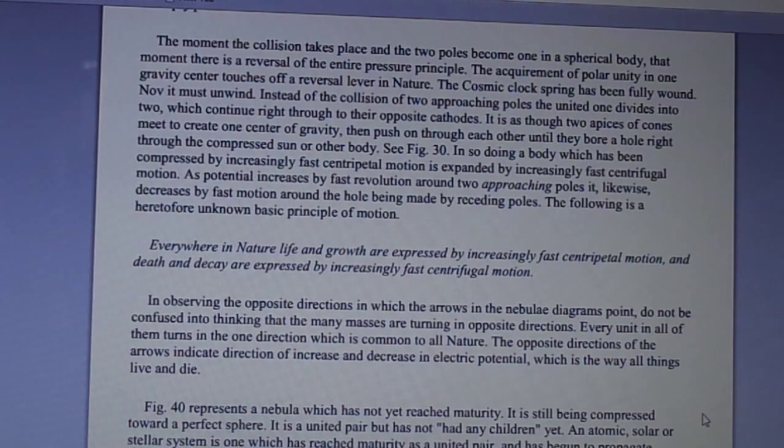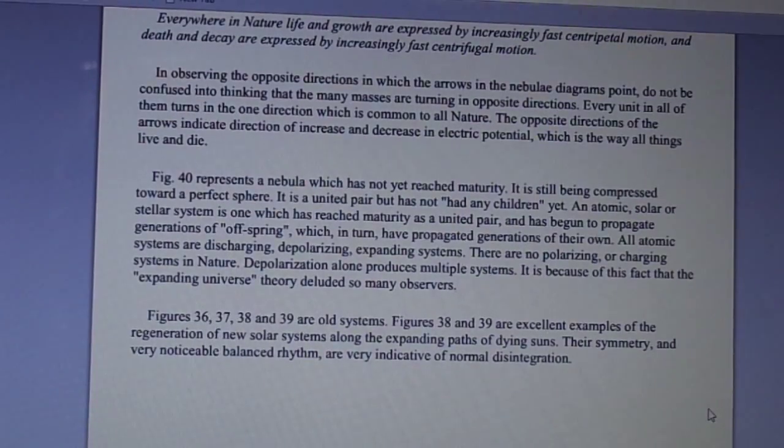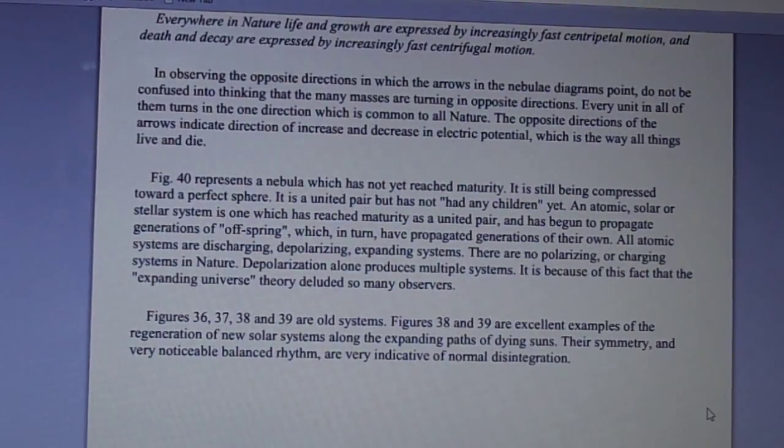In observing the opposite directions in which the arrows of the nebula diagrams point, do not be confused into thinking that the many masses are turning in opposite directions. Every unit in all of them turns in the one direction which is common to its nature. The opposite directions of the arrows indicate direction of increase and decrease in electric potential, which is the way all things live and die. Figure 40 represents a nebula which has not yet reached maturity. It is still being compressed toward a perfect shape. It is a united pair but has not had any children yet.